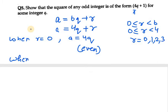Now we need to take r as 1, so it will be a equals 4q plus 1. Now we need to take the square of the number, so a squared equals 4q plus 1 whole squared.